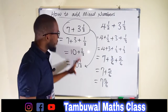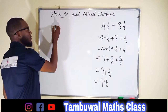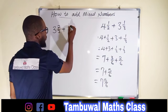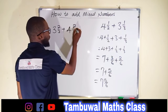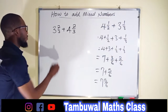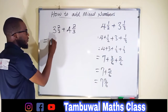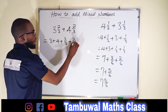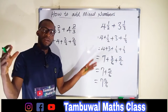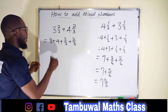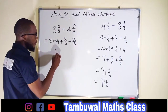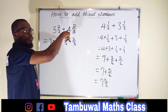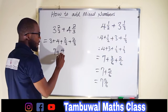So now let us add more mixed numbers together. Suppose we have 3 and 2 over 3, plus 4 and 2 over 3. This is going to be 3 plus 4, plus 2 over 3, plus 2 over 3. We add the whole numbers together and the fractions together. 3 plus 4 is 7. Since they have the same denominator, we just add the numerators: 2 plus 2 is 4 over 3.